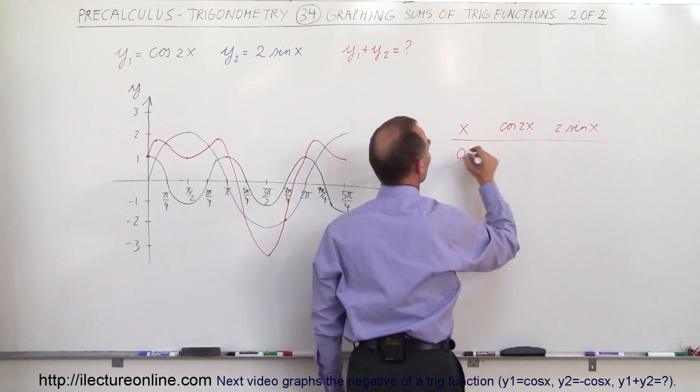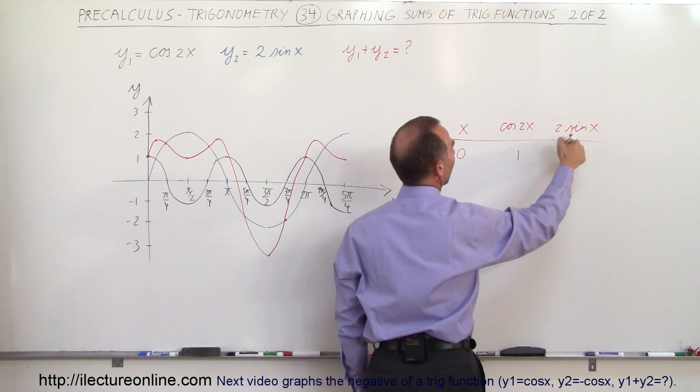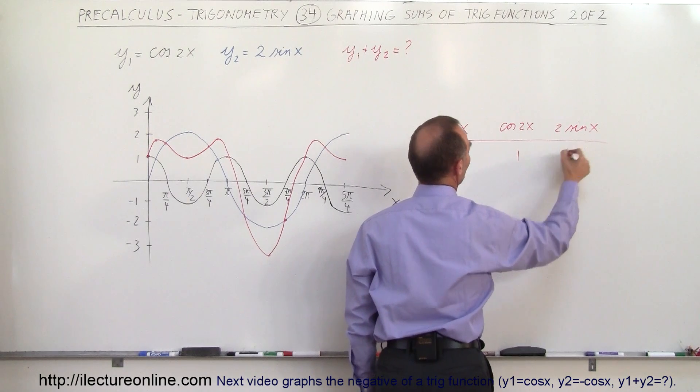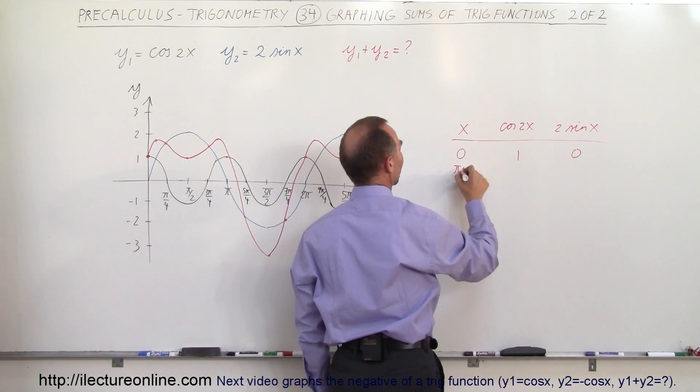If x is equal to 0, the cosine of 2x, 2 times 0 is still 0, that would be 1, and the sine of 0 would be 0. And then let's say you go at pi over 4, that would be 45 degrees.